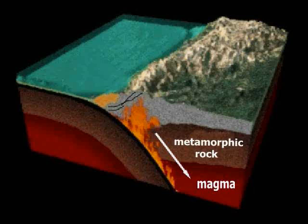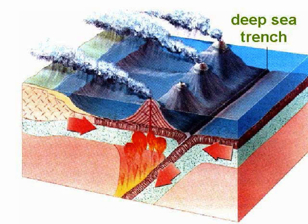Then, as it is pushed deeper down, metamorphic rock is destroyed and melted, and changed into magma. Some of this magma flows out of volcanoes, creating new mountains.